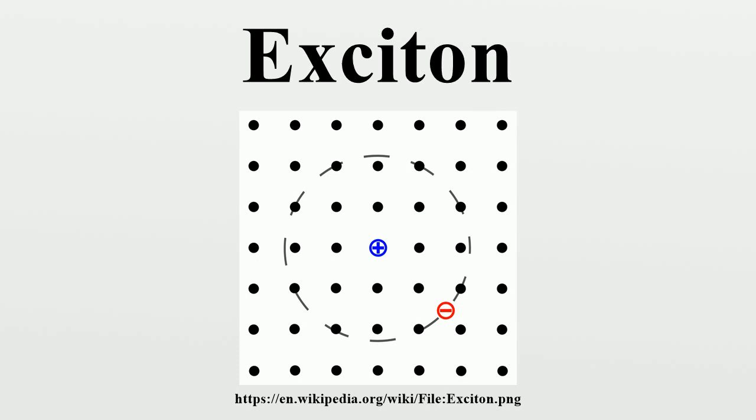Provided the interaction is attractive, an exciton can bind with other excitons to form a bi-exciton, analogous to a dihydrogen molecule.